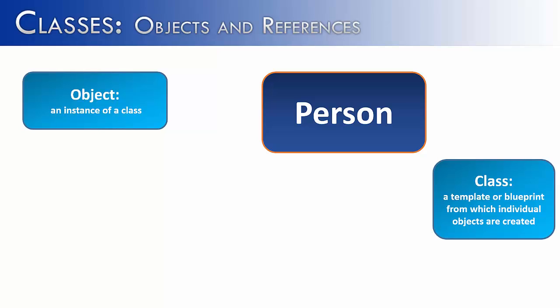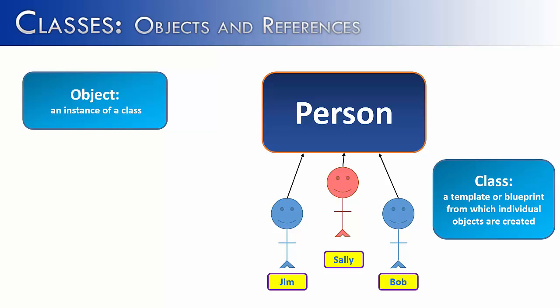So let's say that I had the class called Person. And I created three objects of the Person class, Jim, Sally, and Bob. You can see that Jim and Sally are different from one another. But when it comes down to it, they're all objects of the Person class, meaning they use all the attributes and all the methods of a Person class.